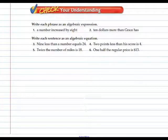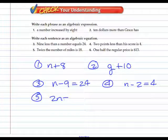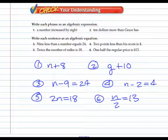Write each phrase as an algebraic expression. Number one, a number increased by 8: n plus 8. Number two, $10 more than Grace has: G plus $10. Number three, an equation: nine less than a number equals 24. Number four, two points less than his score: s minus 2. Number five, twice the number of miles is 18: 2n equals 18. And six, half the number would be n divided by 2 is 13.